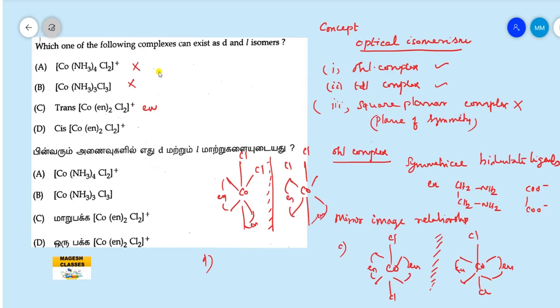So in this case, the mirror images have a non-superimposable character. In case of cis isomers, the answer is cis [Co(en)2Cl2]+.